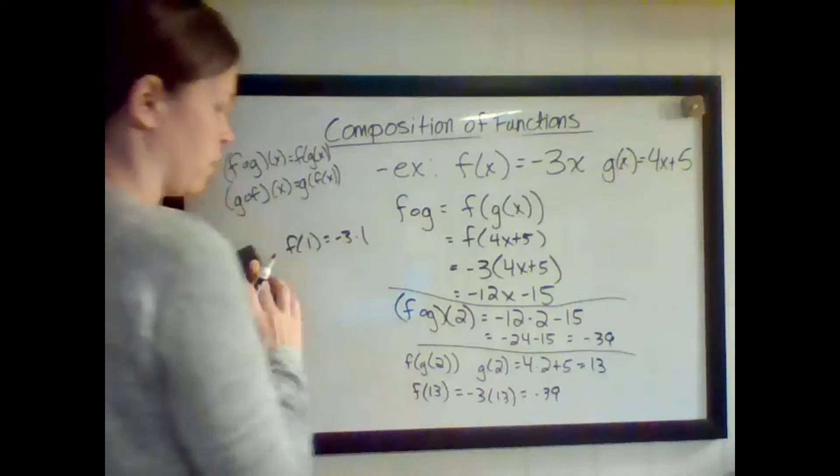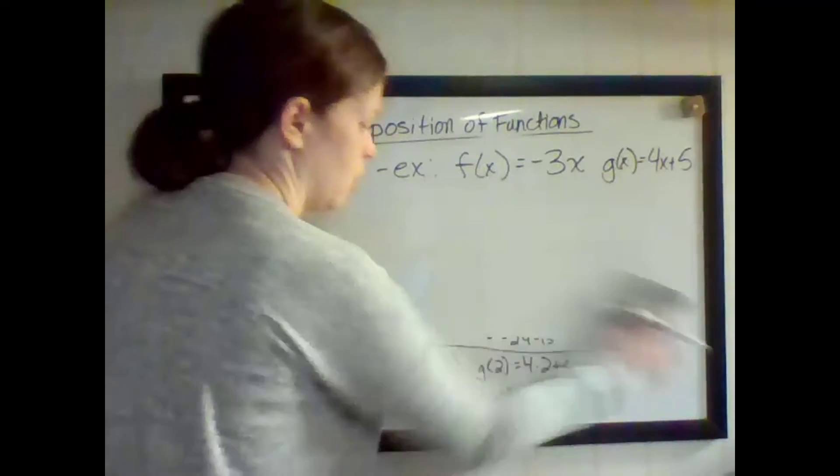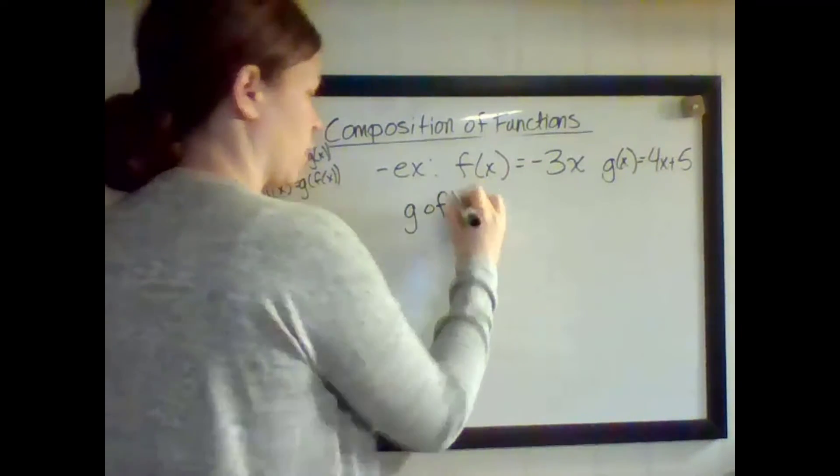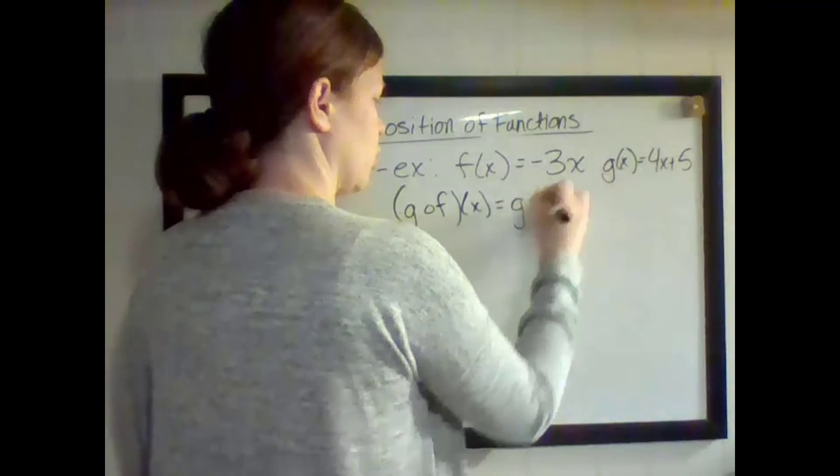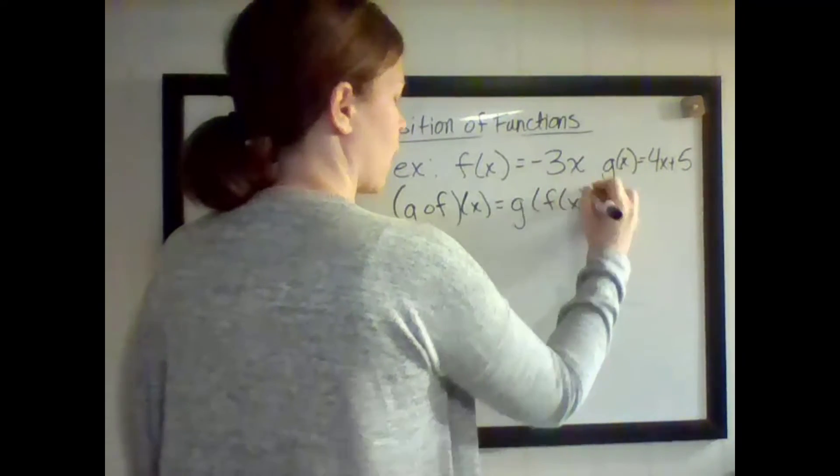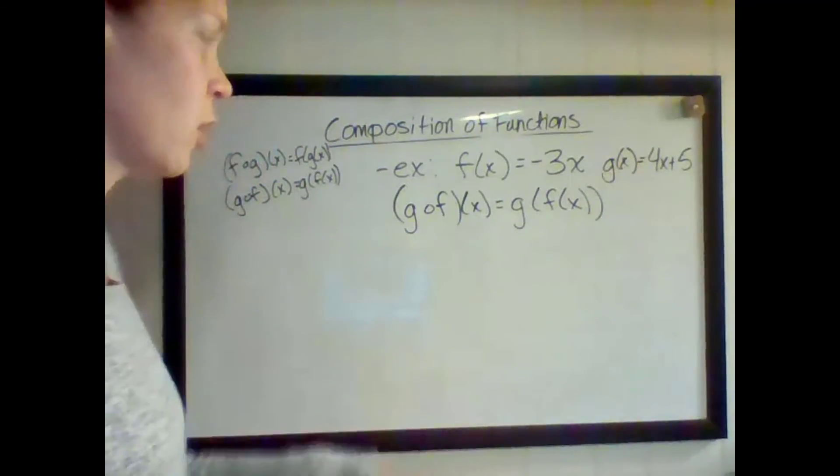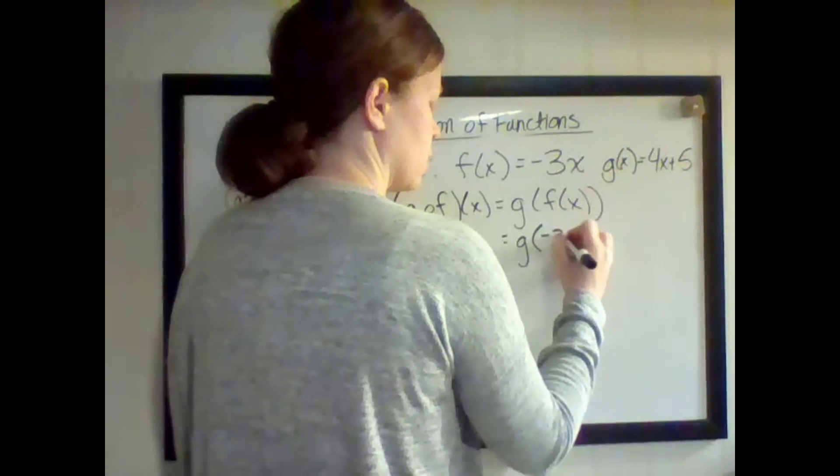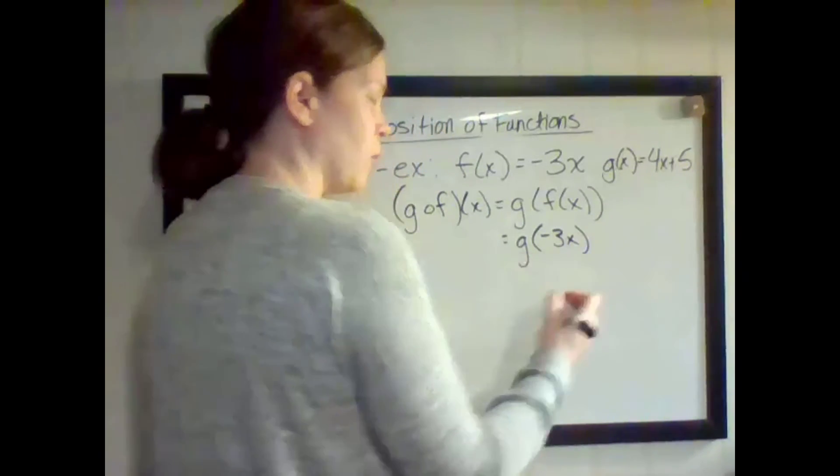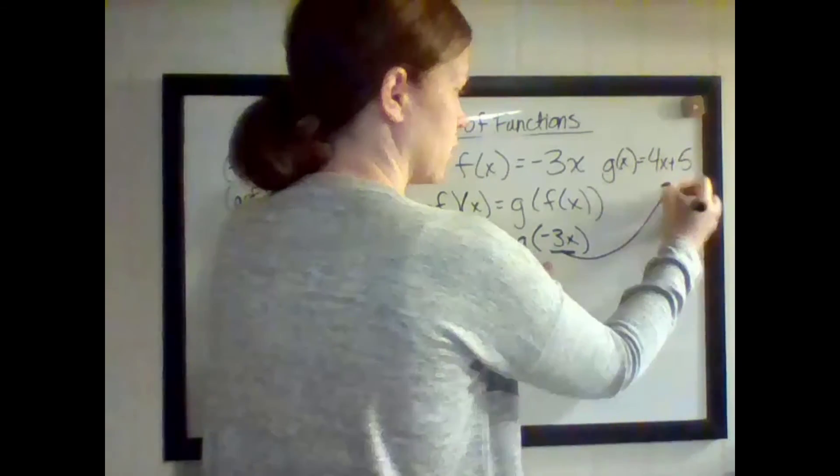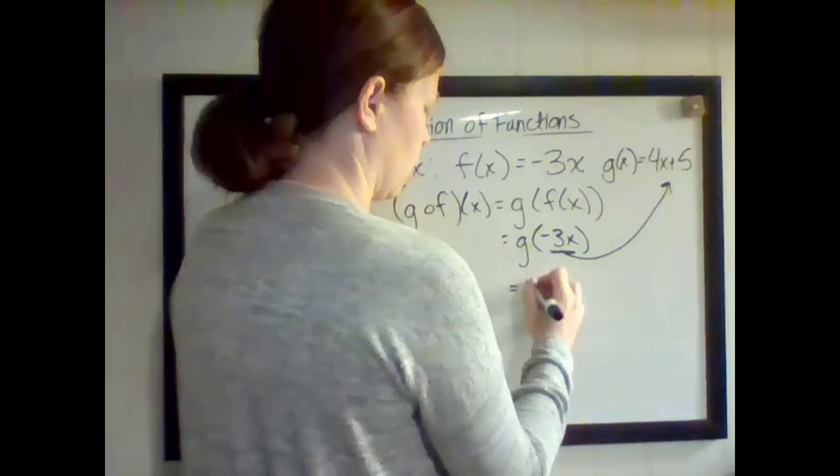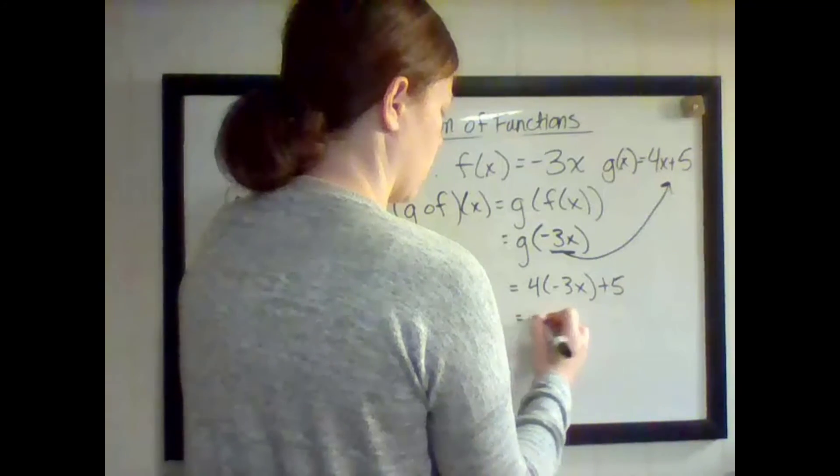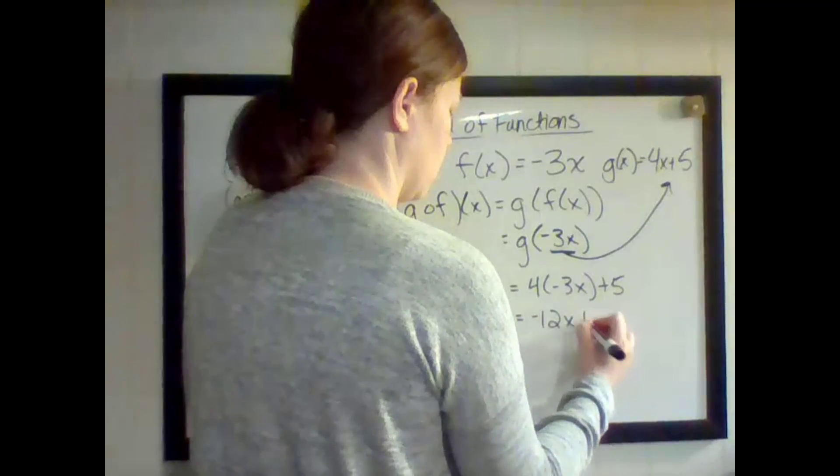Let's do one more. Let's go the other way. Let's do G of F. G of F of X. So that means G of F of X. I always rewrite it like that. It gets too confusing if you try to skip a step. And then I always rewrite G of whatever F of X is. And now I'm looking, this right here is going to get plugged into that equation. So 4 times negative 3X plus 5. So negative 12X plus 5.